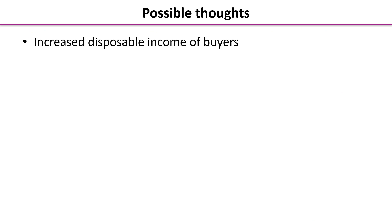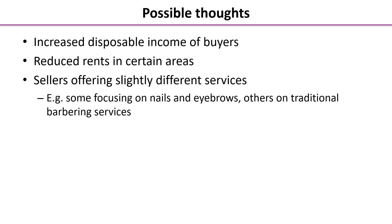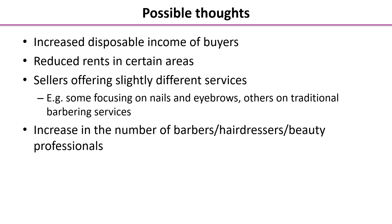The possible reasons could relate to the disposable income of buyers — the power of the consumer. Or it might be due to reduced rent in certain areas lowering sellers' costs and making it easier to set up. Each of these sellers is probably offering slightly different services: some are straightforward barbers, others offer men's and women's hairdressing, nails, eyebrows, or other beauty treatments. Finally, there may simply be more people qualifying as barbers, hairdressers, and beauty professionals.